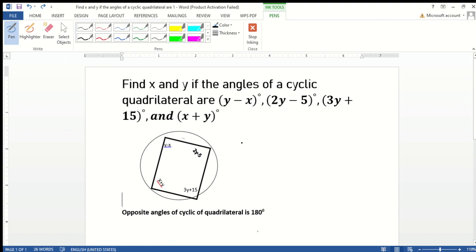You know, in a cyclic quadrilateral, the opposite angles sum up to give you 180 degrees. This angle and this angle sum to 180 degrees, while this angle and this angle also sum to 180 degrees. So we use those facts to establish equations. From here we should know that (y - x) must go with (3y + 15).